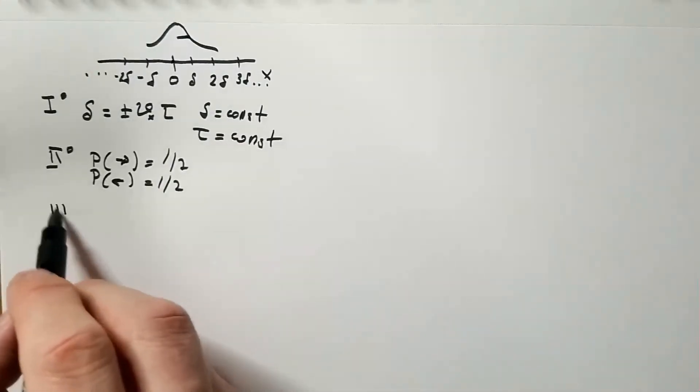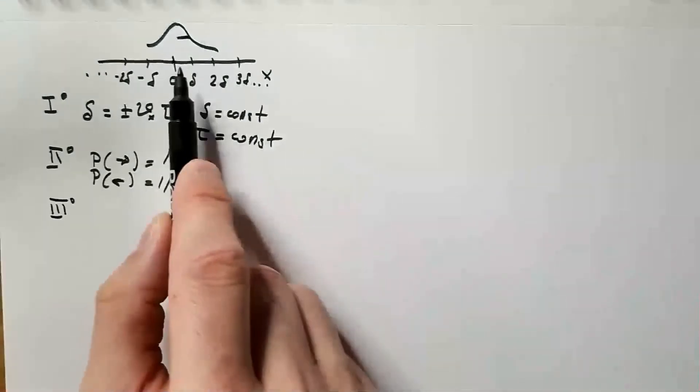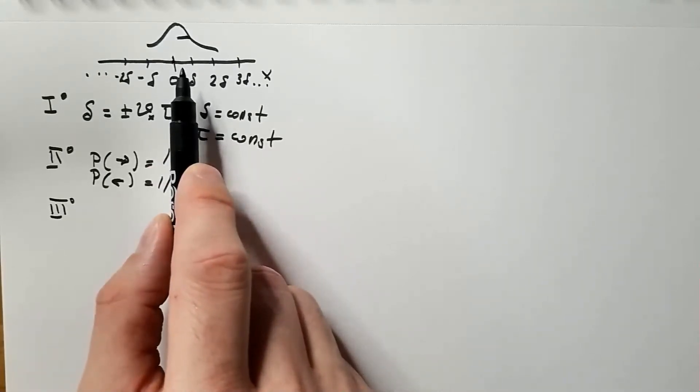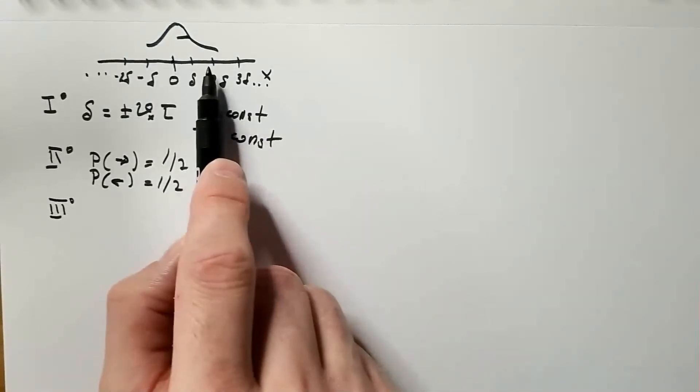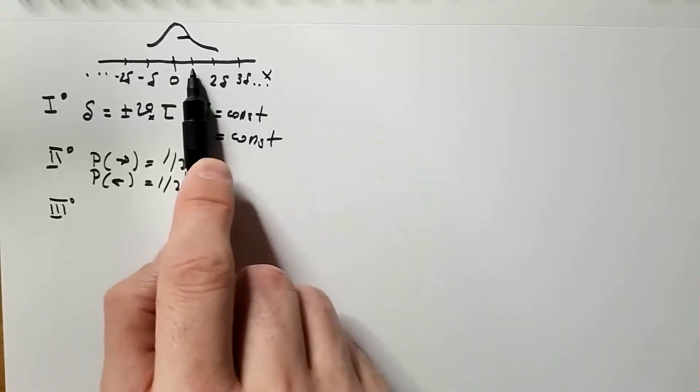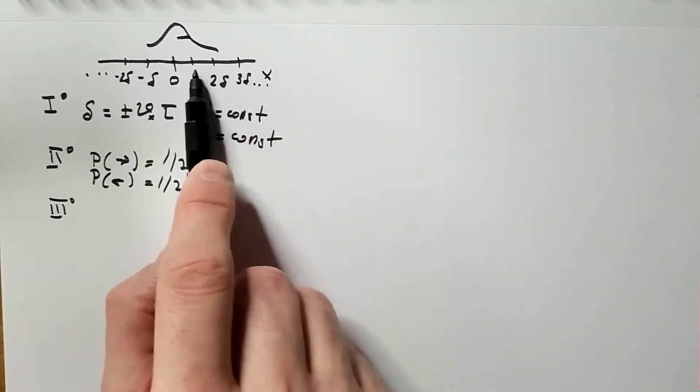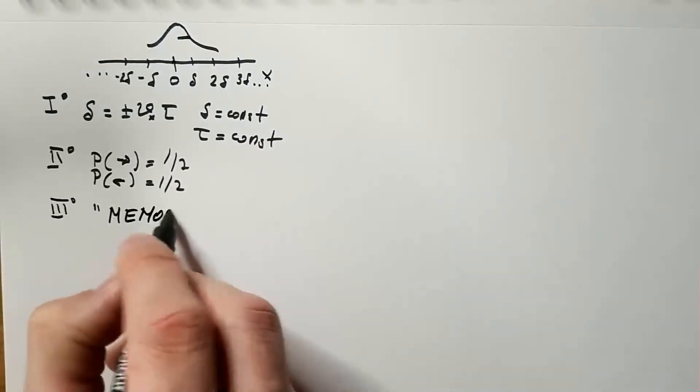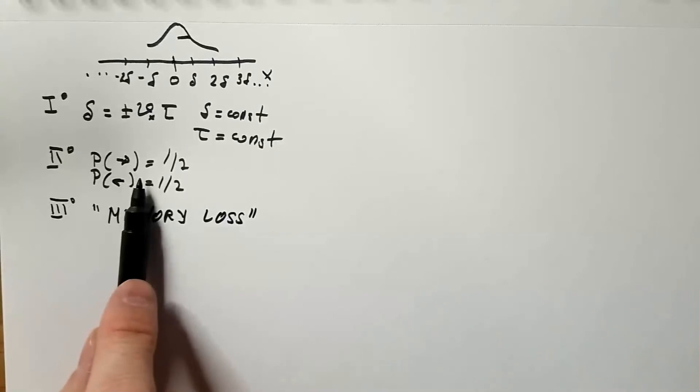I will additionally strengthen rule number two by saying that wherever particle is, after some n steps, it doesn't know from where it arrived there. What do I mean by that? Let's say, after many steps, particle finds itself at 2 delta. It doesn't know if it came here from 3 delta or delta. Which means that, in the next step, it is equally likely to go to 3 delta or 2 delta. And I call that memory loss. Memory loss basically tells us that the rule number two will be preserved for all times.